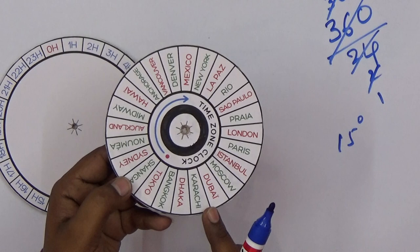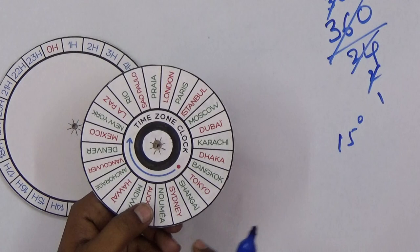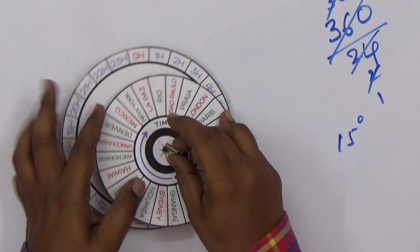Now you can keep these circles together and attach them with a screw. Just close them together.